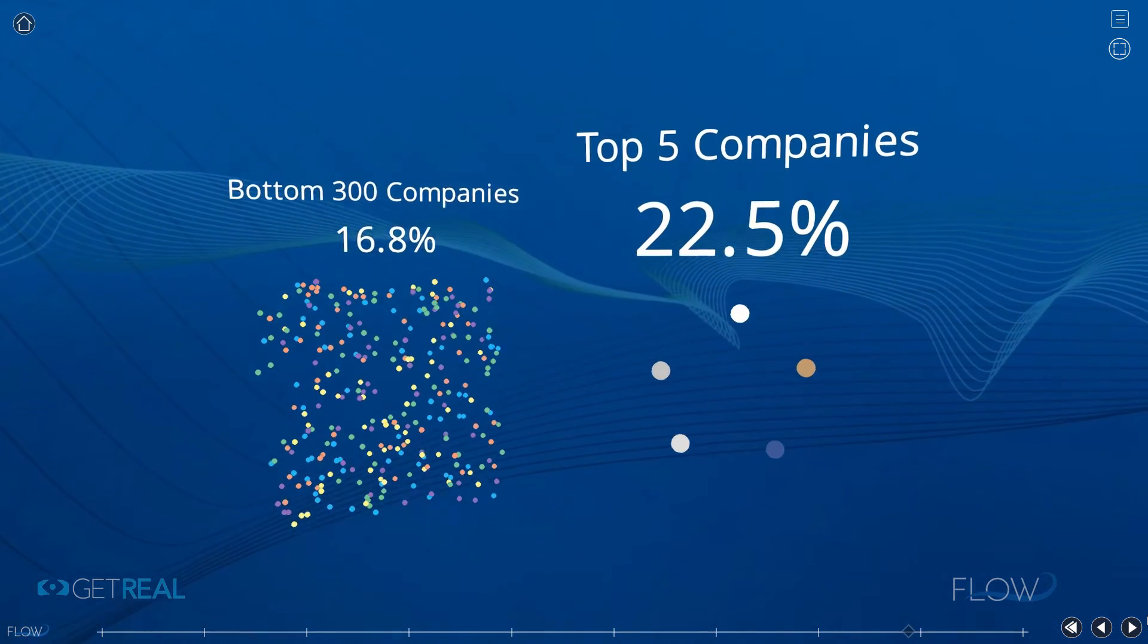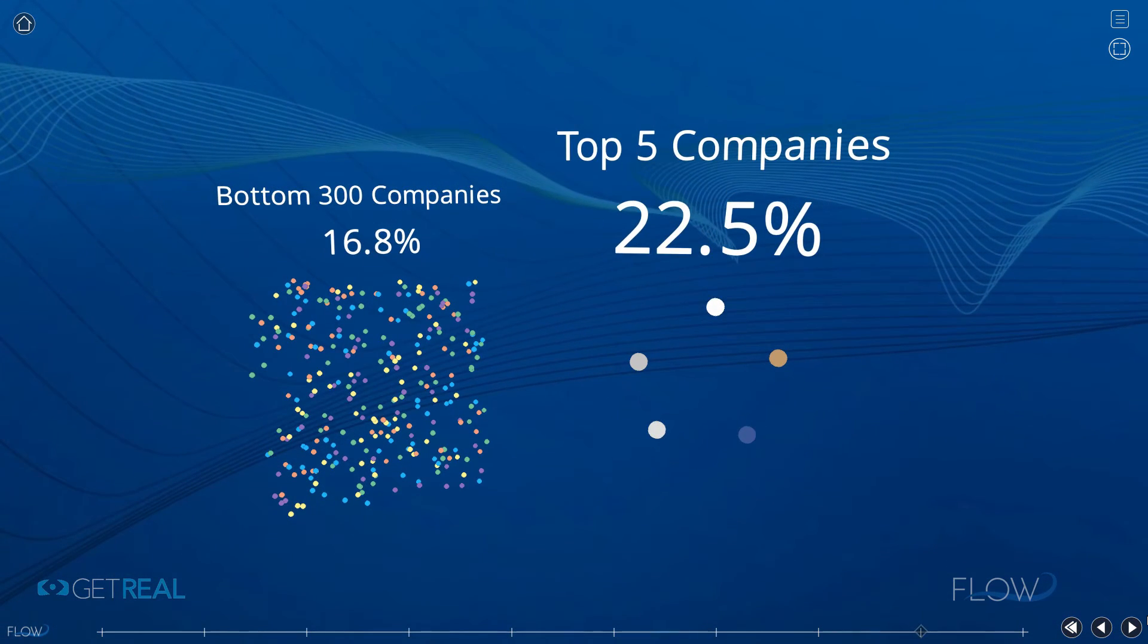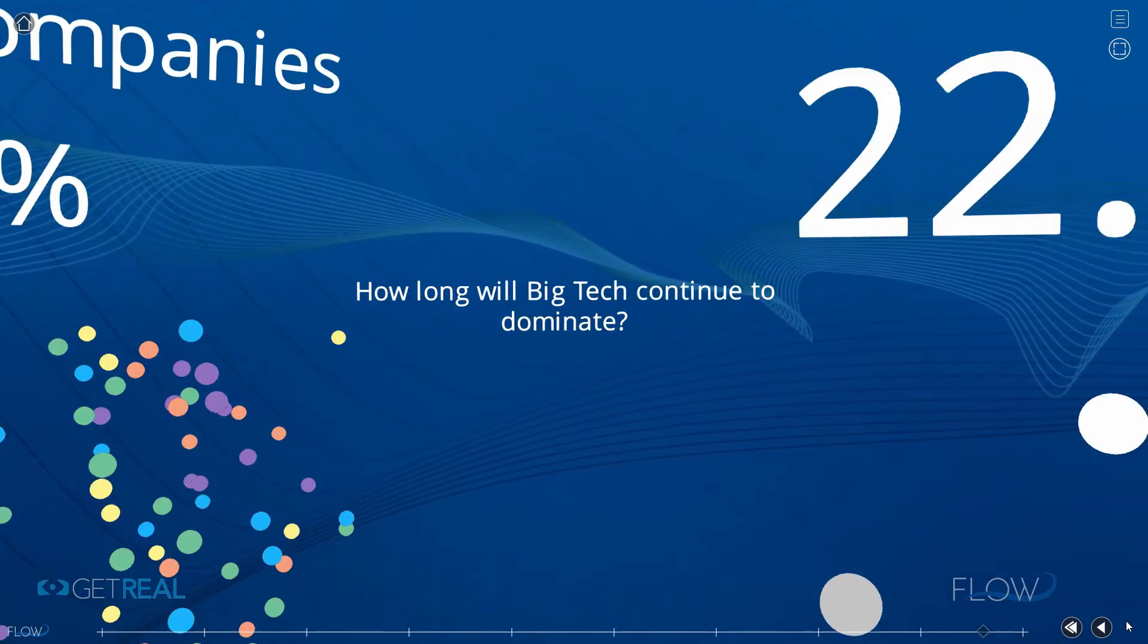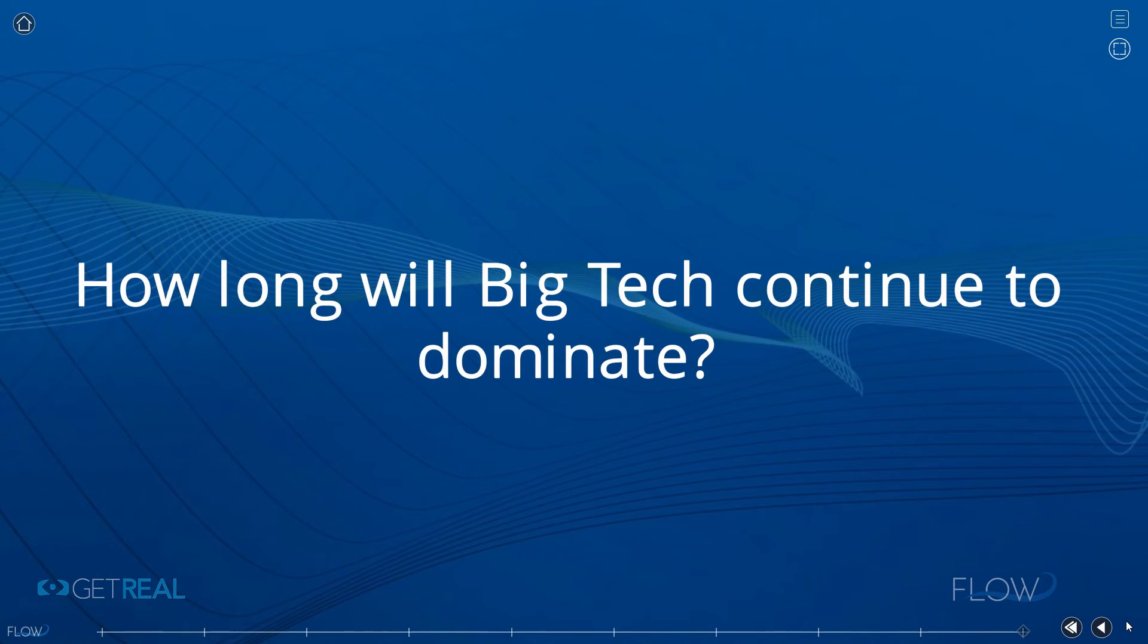Finally, the top five companies represent 23% of the S&P. The bottom 300 companies represent 20%. How long will Big Tech continue to dominate?